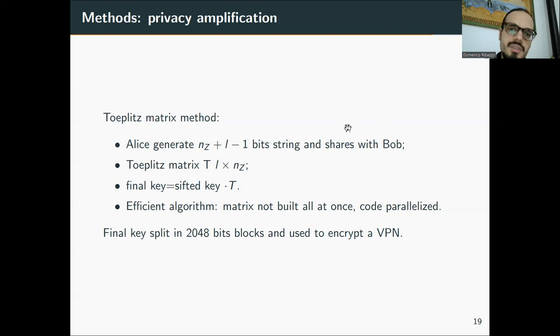Then after the error verification, there was the privacy amplification that is basically using a hash function to make the key shorter in order to reduce the correlation between some key that Eve got and the key of Alice and Bob. So Alice generates a bit string that is long enough to create the matrix that is L times NZ, where L is the final key that you want to obtain considering the theoretical bound that I showed before, and NZ is the block size. And then Bob uses this key to obtain the final key just making dot product. So the sifted key dot this matrix.